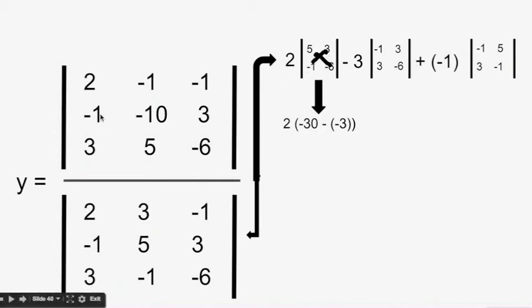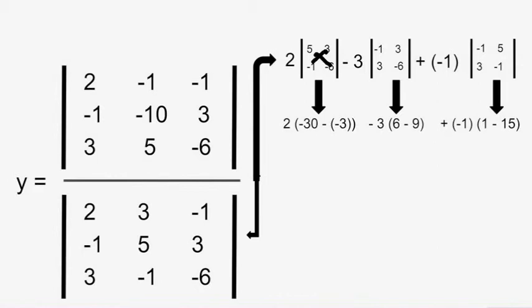The second term is -3 times 6 minus 9 through cross multiplication, and the final term is a plus -1 times 1 minus 15 through cross multiplication. Then it's just simple math. You have -54 plus 9 plus 14, giving a final answer of -31.